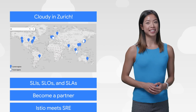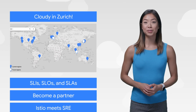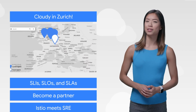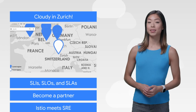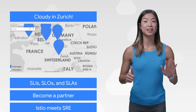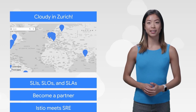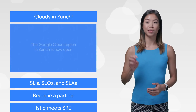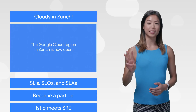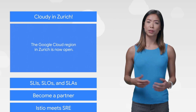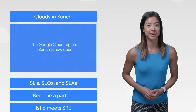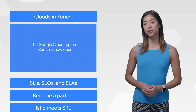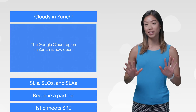Our Google Cloud Platform region in Zurich is now live and ready for business. Let's do this with numbers — it's our sixth European region and our 19th worldwide, and the Zurich GCP region comes with three availability zones. The coolest number: hosting applications here can improve latency for Swiss end users by up to 10 milliseconds.